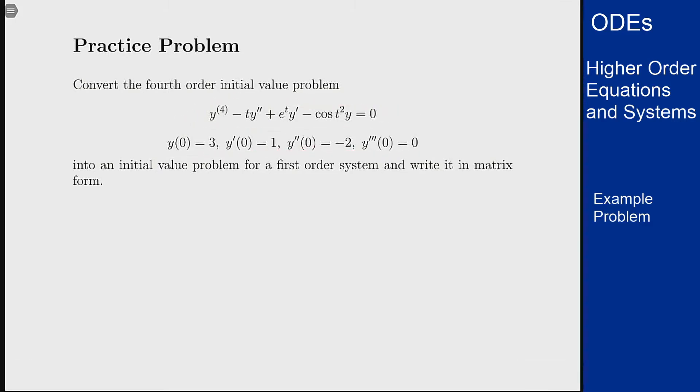I want to convert this into a first order system and write it in the appropriate form. The trick here always is that we'll let each component be the derivative of the one before it until we get to the last level here. And since it's a fourth order equation I should want four components here.